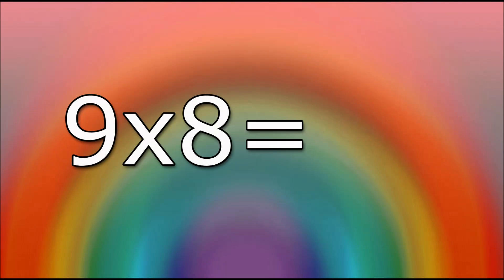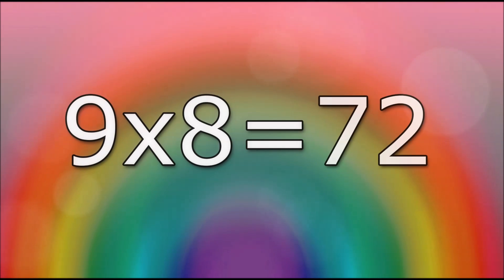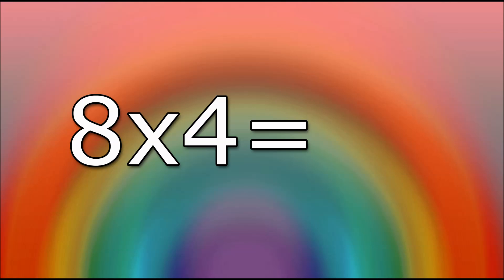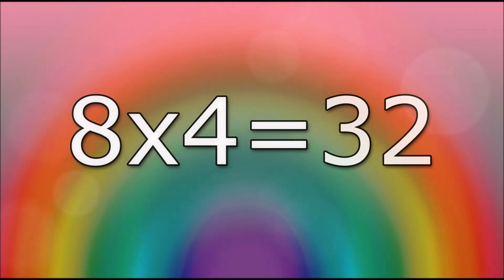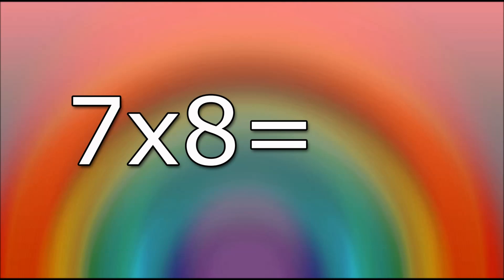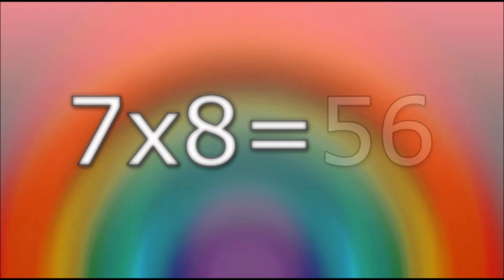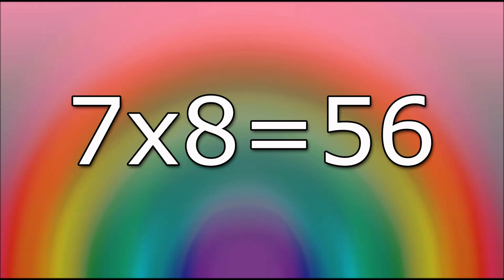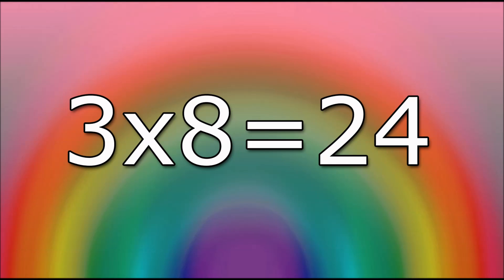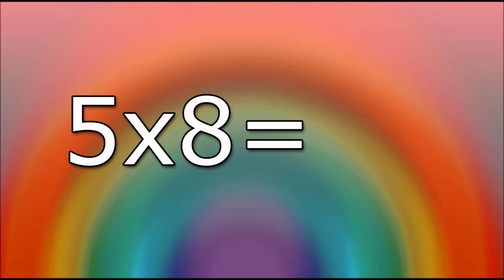9 times 8 equals 72. 8 times 4 equals 32. 7 times 8 equals 56. 3 times 8 equals 24. 5 times 8 equals 40.